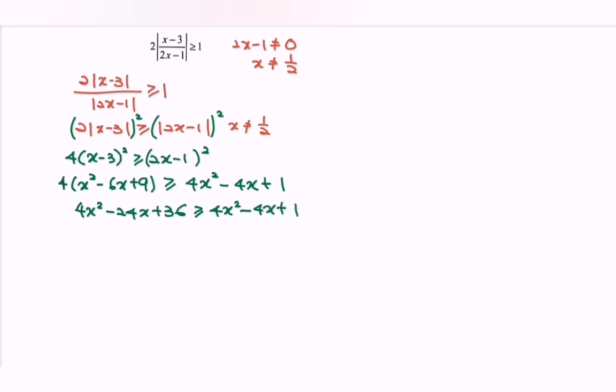Simplify the inequality. The 4x squared terms cancel. 36 minus 1 equals 35. Negative 24x plus 4x gives negative 20x. So negative 20x is greater than or equal to negative 35, which means 20x is less than or equal to 35.